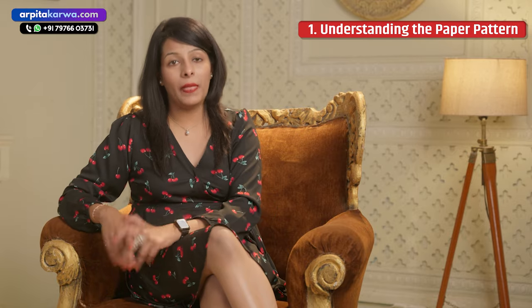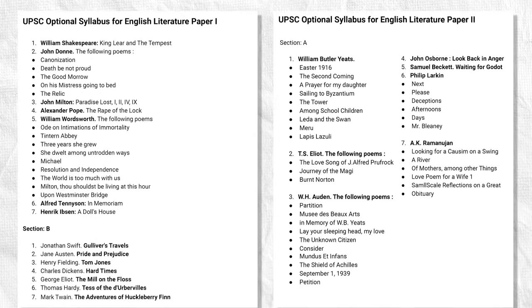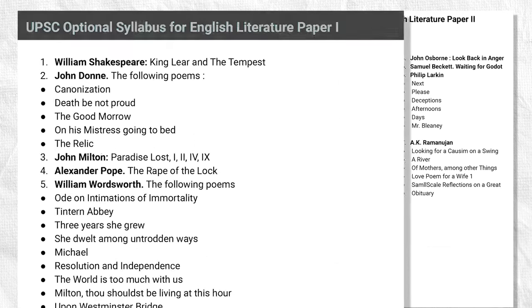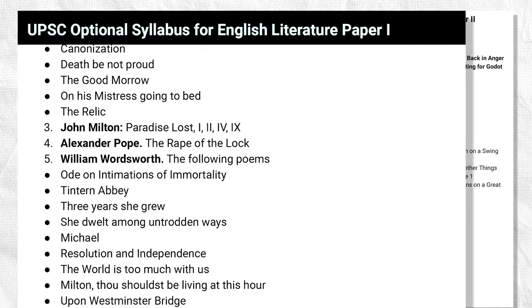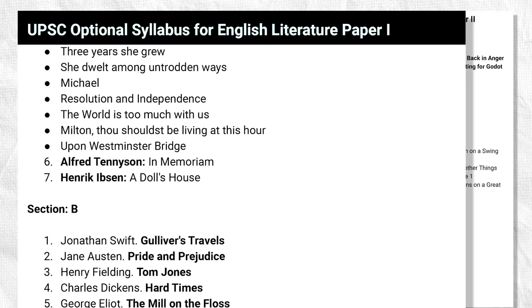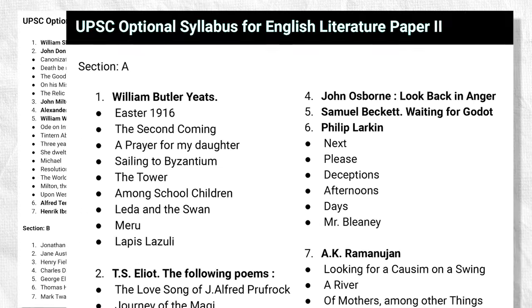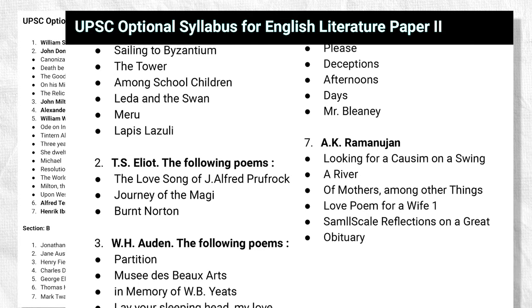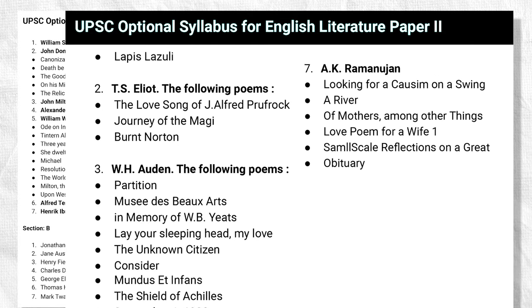Let's begin by looking at the paper pattern. On the screen in front of you, you would see that we have displayed the UPSC syllabus. Clearly the syllabus is divided into two papers — paper 1 and paper 2. Paper 1 deals with poetry, drama, fiction, and non-fiction written from 1600 to 1900, whereas paper 2 deals with poetry, novels, and plays written from 1900 to 1990.